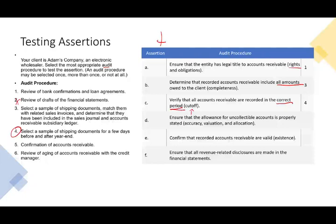Ensure that the allowance for uncollectible accounts is properly stated — which is the accuracy, valuation, and allocation assertion. Here we're dealing with the credit worthiness of the receivable. Do they need to book any allowance for doubtful accounts? How long is the accounts receivable outstanding? You have to understand the industry — if the industry is experiencing difficulty, the allowance may need to increase. You would review the aging of accounts receivable with the credit manager and use your judgment to determine whether the allowance is appropriate.